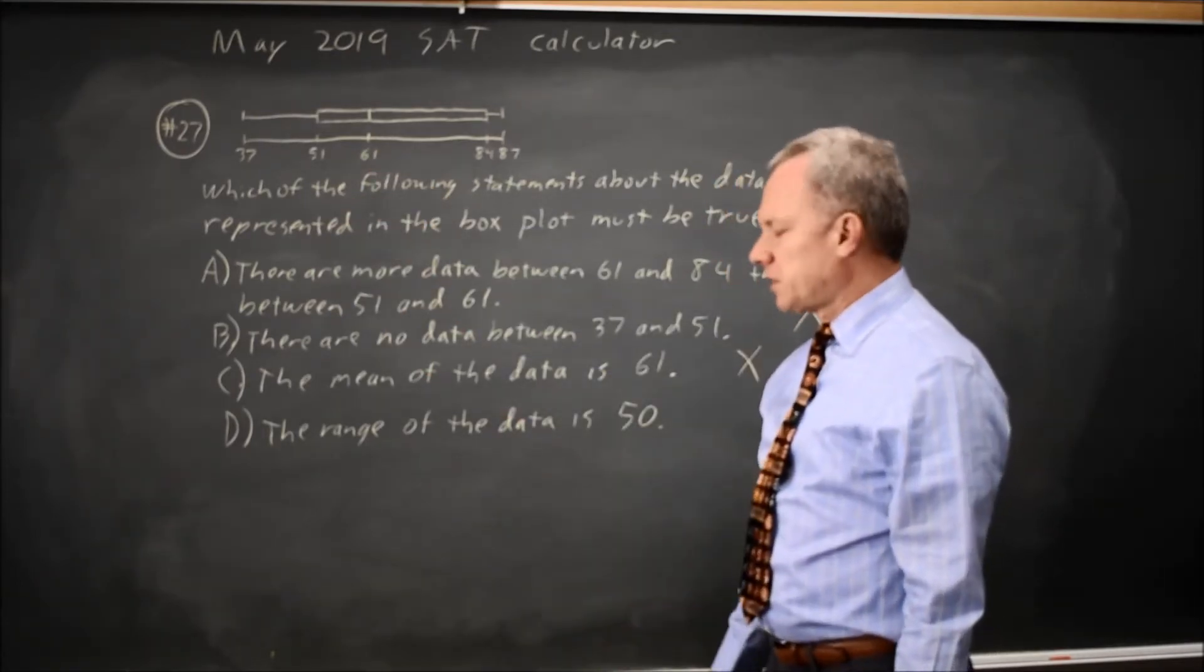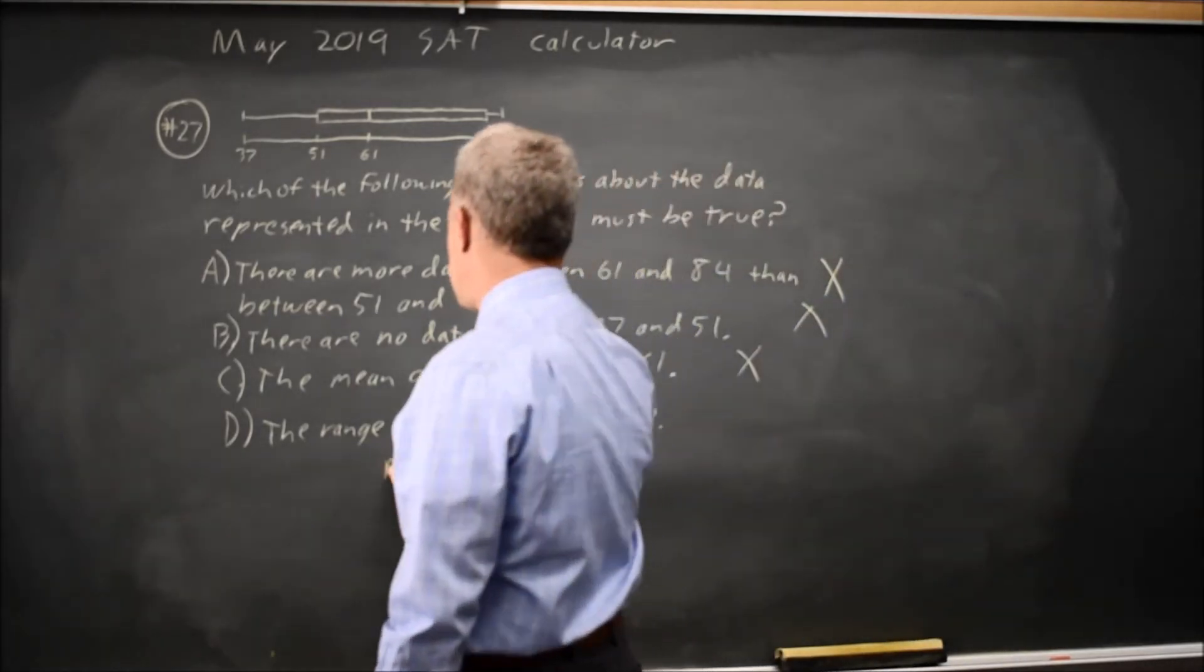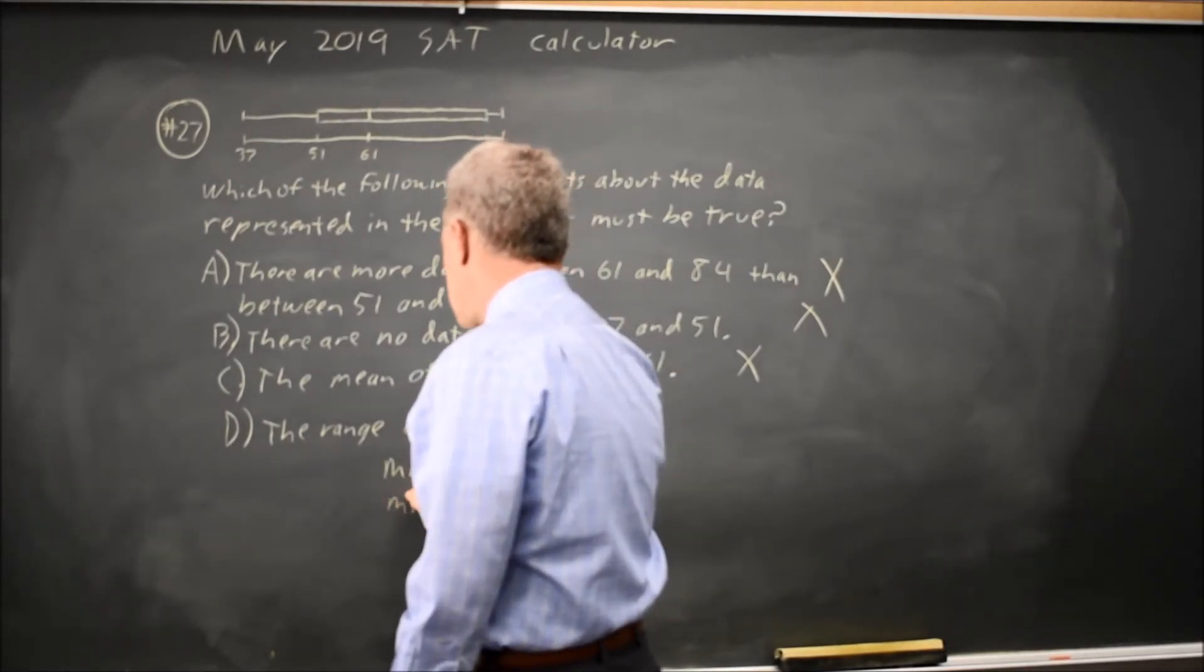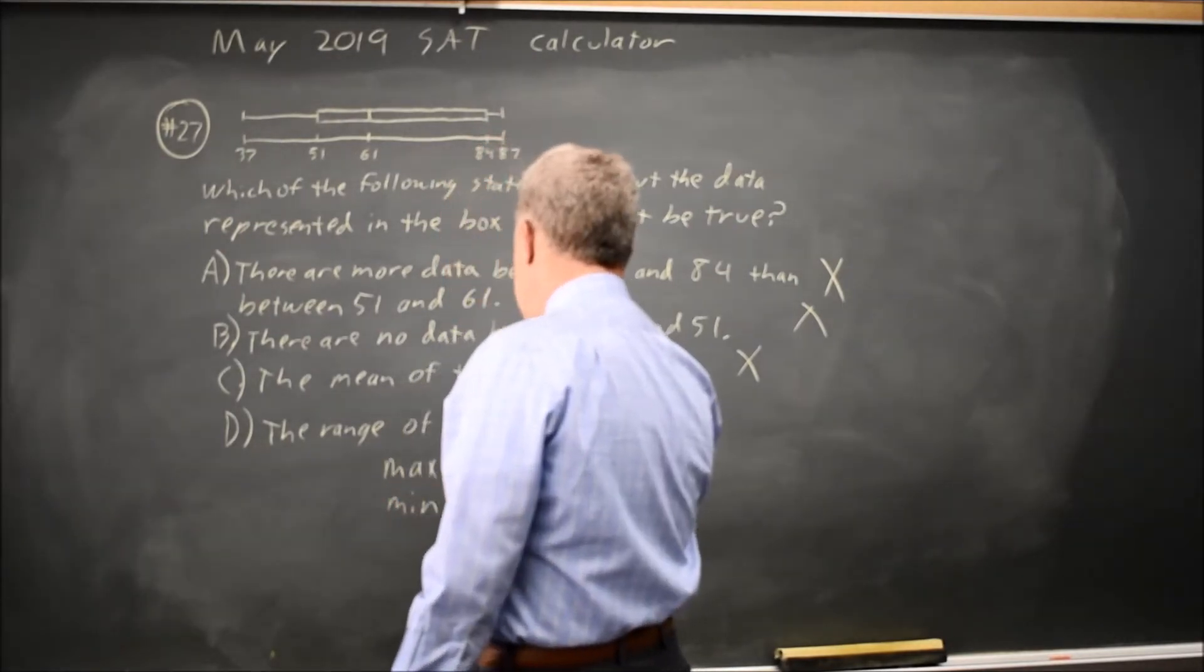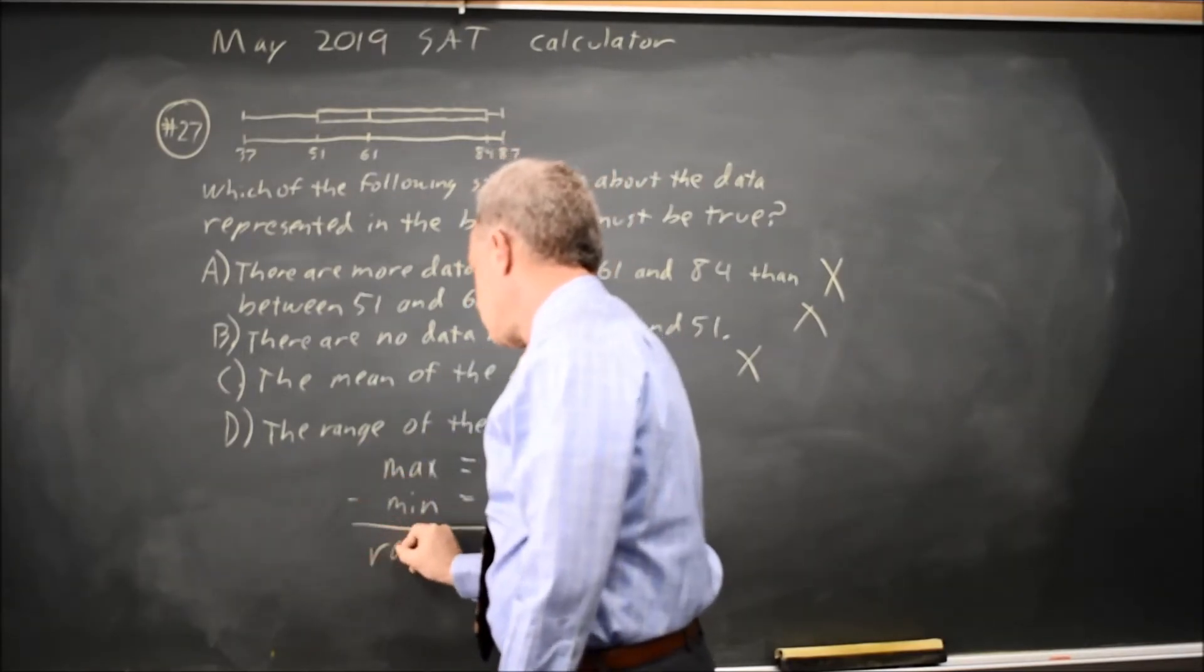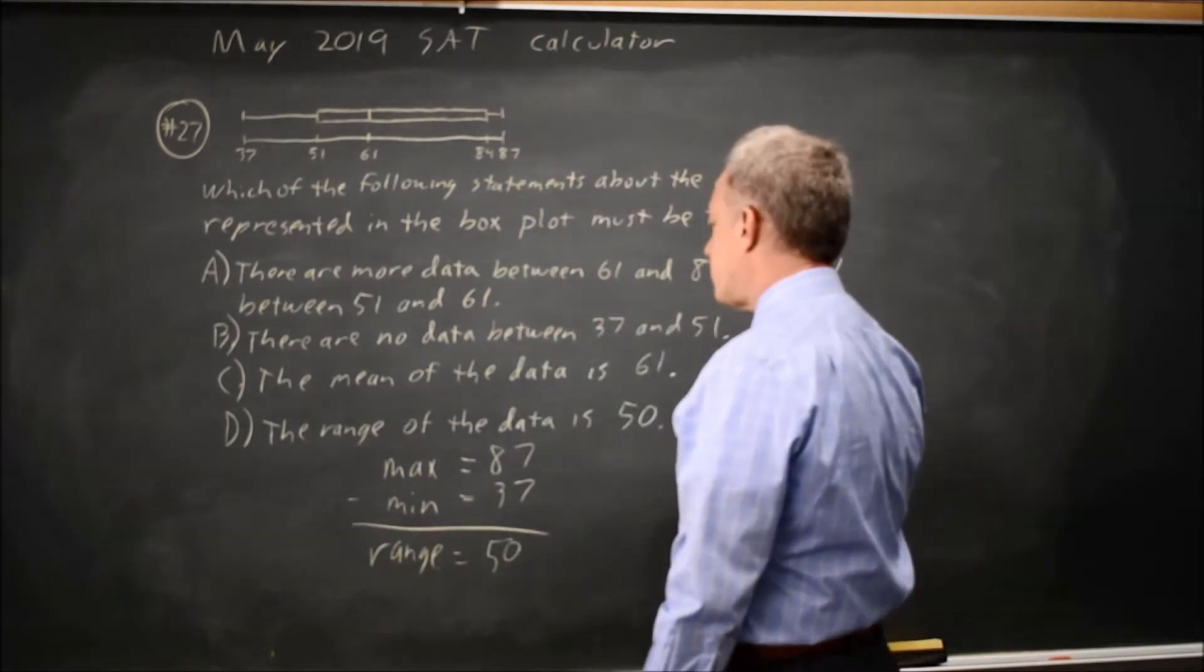Choice D, the range of the data is 50. The box plot shows the maximum as 87 and the minimum as 37, and the difference between the maximum and the minimum is the range, and that is 50. So choice D is correct.